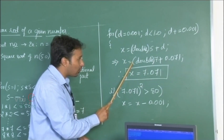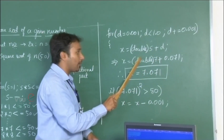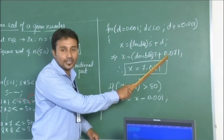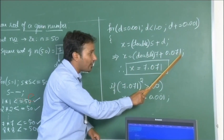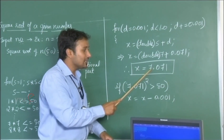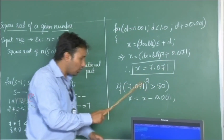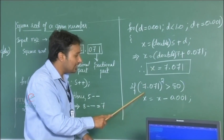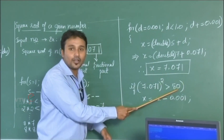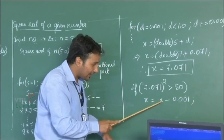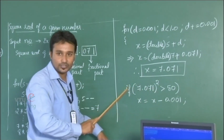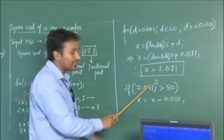In this case x equals 7 — the integer converted to double — added with d. When d equals 0.071, the condition is satisfied, so x equals 7.071. The final condition ensures that if the calculated value x squared exceeds the real value 50, we subtract 0.001 from x. This gives us the final computed square root. So this is the complete tracing of this program.